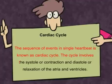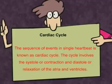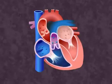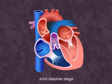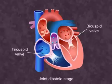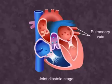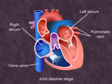This cycle involves the systole (contraction) and diastole (relaxation) of the atria and ventricles. Look at this figure. Here you can make out that all four chambers of the heart are in a relaxed stage, i.e., the joint diastole stage. The bicuspid and tricuspid valves are open, so blood flows from the pulmonary vein and vena cava into the left and right atrium respectively.